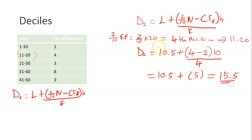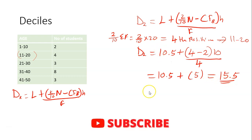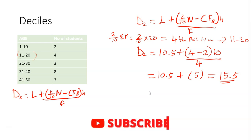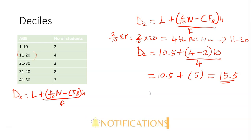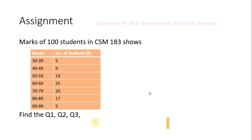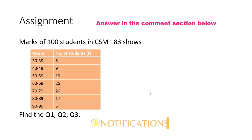So that gives us 10.5 plus 5, which is 15.5. The second decile is 15.5. You can practice more by finding the seventh, eighth, sixth, or fifth decile. Thank you for watching.